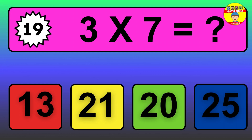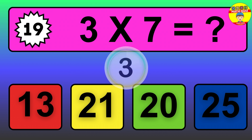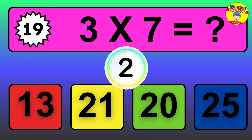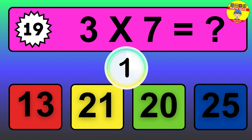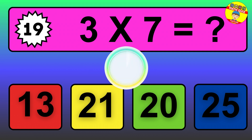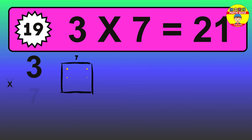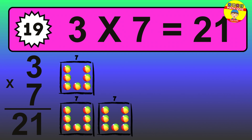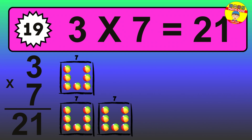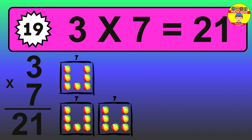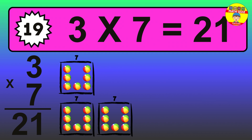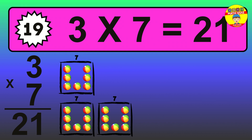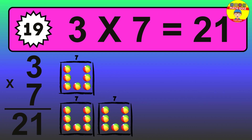Question 19. Three times seven equals what? The answer is three times seven is 21. To calculate, we have three groups with seven balls each one. So, how many balls do we have? 21 balls.